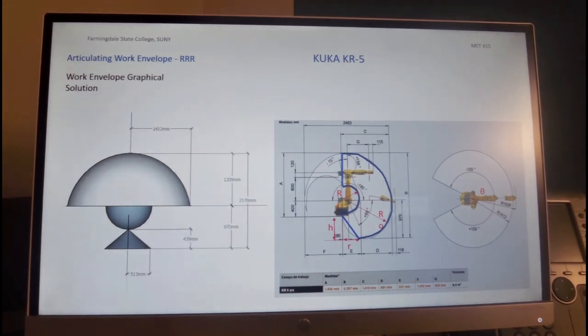We can also use graphical technique, which could be a little bit more accurate. We can mimic on a CAD system, these values, the 1412 millimeters. We can draw that to size, and the 976, we can put to size the 531 that we're showing over here. We can also put to size,